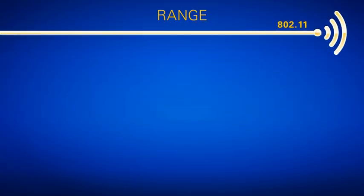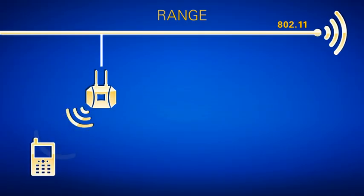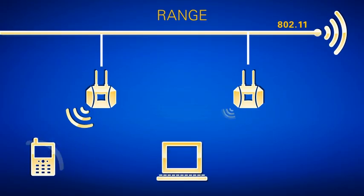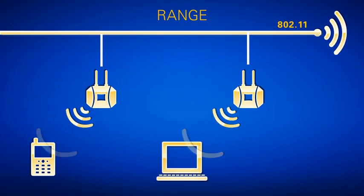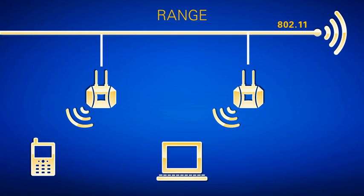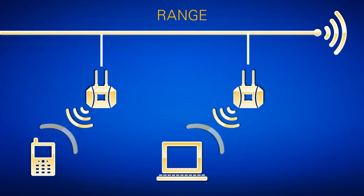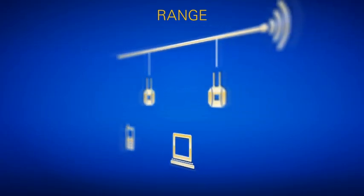With 802.11, you have what is known as an access point and clients. If you have an Ethernet network, you can use several access points to extend your range. You can then use wireless to connect to your clients, which is what devices such as laptops or smartphones do. To increase your range, you can install more access points on the Ethernet.